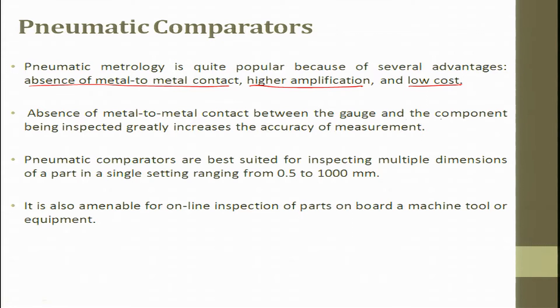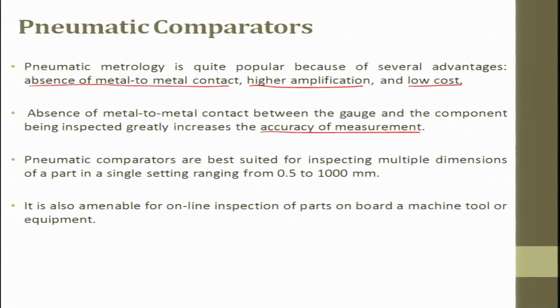Pneumatic metrology is quite popular because of several advantages it has: absence of metal to metal contact, high amplification can be done depending upon your circuit pneumatic circuit what you develop, and it is low cost reliable. Absence of metal to metal contact between the gauge and the component being inspected greatly increases the accuracy of measurement. If you go back and see in the dial gauge type we always said at the dial gauge there is a wear and tear which is happening at the tip. This wear and tear leads to an error when you try to measure it. The pneumatic gauges are best suited for inspecting multiple dimensions of a single part setting range from 0.5 millimeter to 1000 millimeter. It is also amenable for online inspection of part on board a machine tool or an equipment.